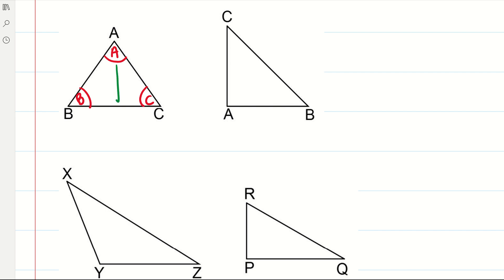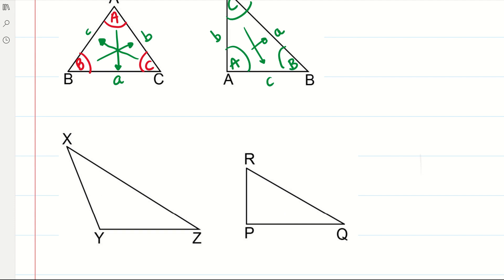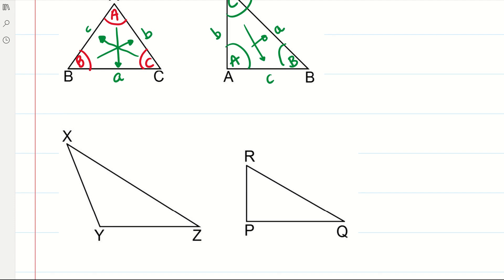The side opposite angle A is lowercase a. The side opposite angle B is lowercase b, and the side opposite angle C is lowercase c. So A, B, C — the angles are all capitals; a, b, c — the sides are all lowercase. And it doesn't matter what the angles are called.